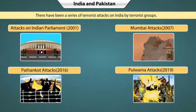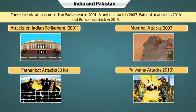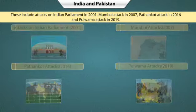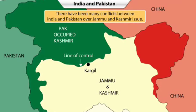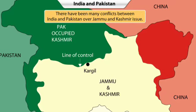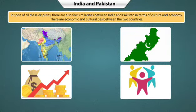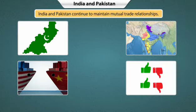There have been a series of terrorist attacks on India by terrorist groups. These include the attack on the Indian Parliament in 2001, the Mumbai attack in 2007, the Pathankot attack in 2016 and the Pulwama attack in 2019. These attacks have severely affected the relationship between India and Pakistan. Apart from these attacks, there have been many conflicts over the Jammu and Kashmir issue for past several years.